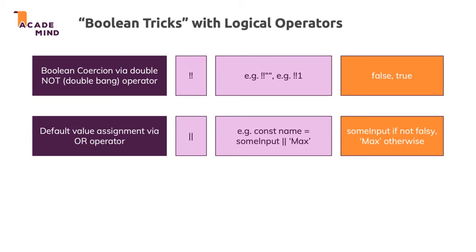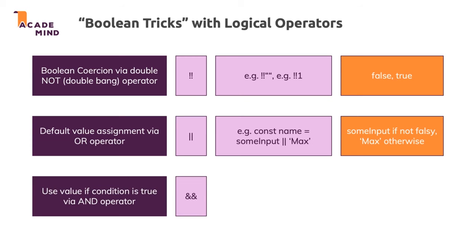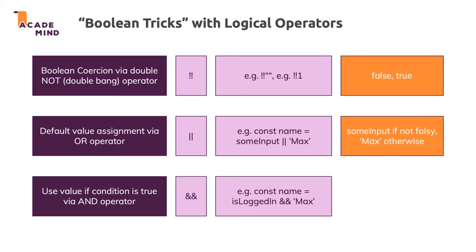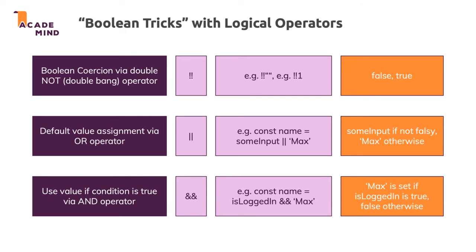The AND operator allows us to do something similar. Instead of using it to assign a default value, we can use the AND operator to get the last value in a combined check. If isLoggedIn is a truthy value or a real true Boolean, AND will return the last value it's looking at. Unlike OR, AND always looks at both values, because all need to be true or truthy. If both are true or truthy, it returns the last value. If the first value is true, it always returns the second value. If the first value is false, it always returns the first value. So we would return 'Max' if isLoggedIn is true, and null or false or whatever is stored in isLoggedIn otherwise.